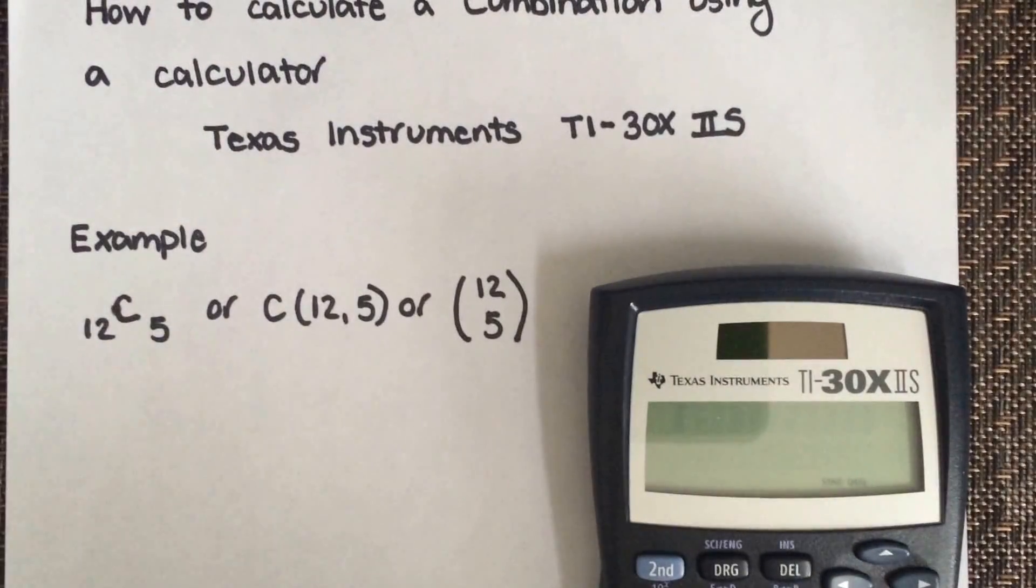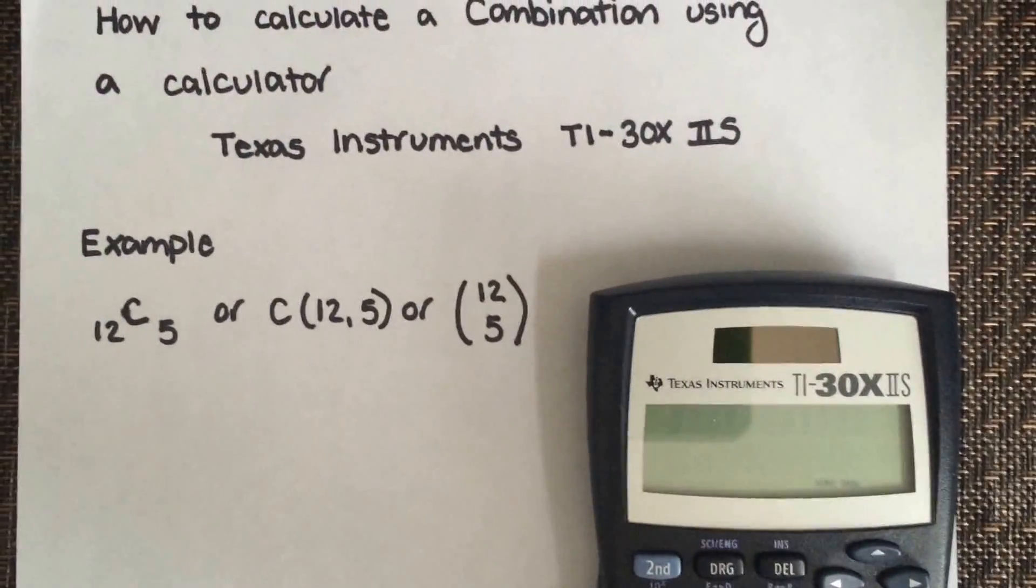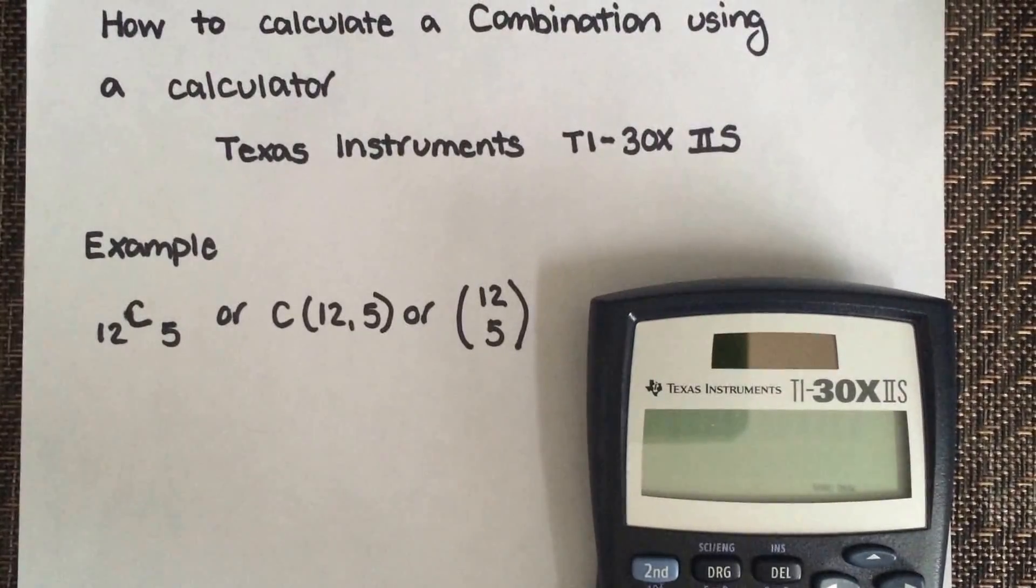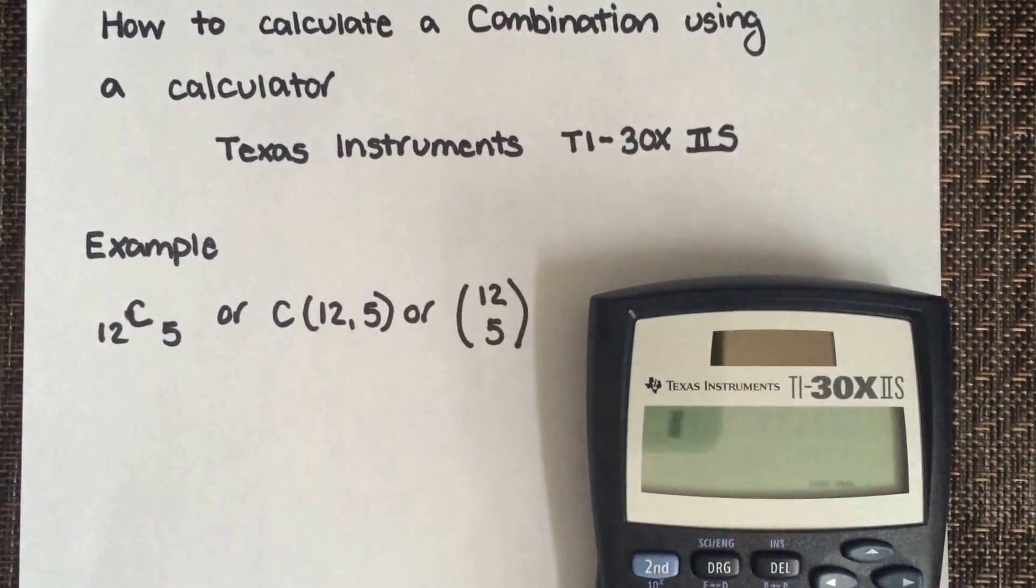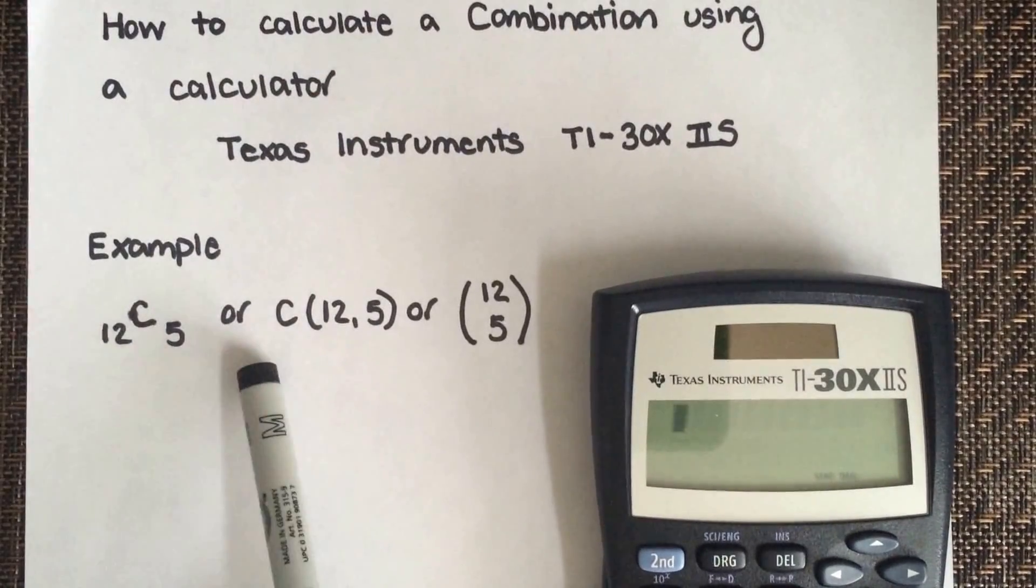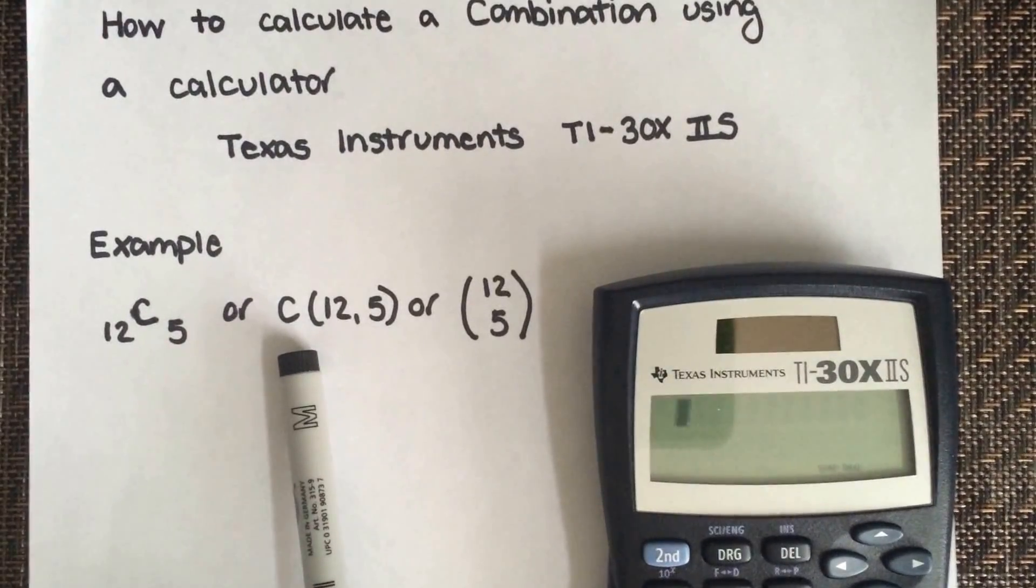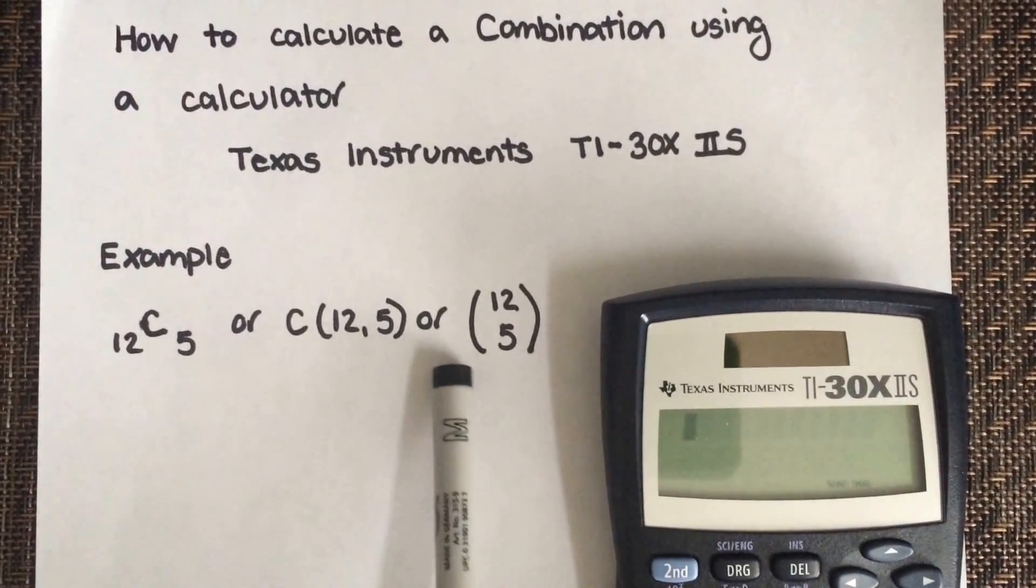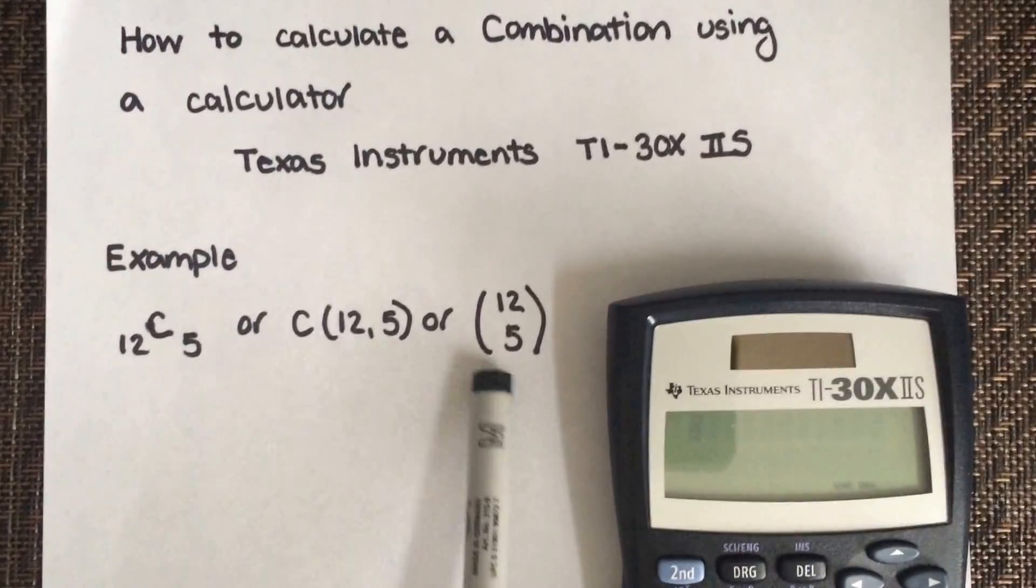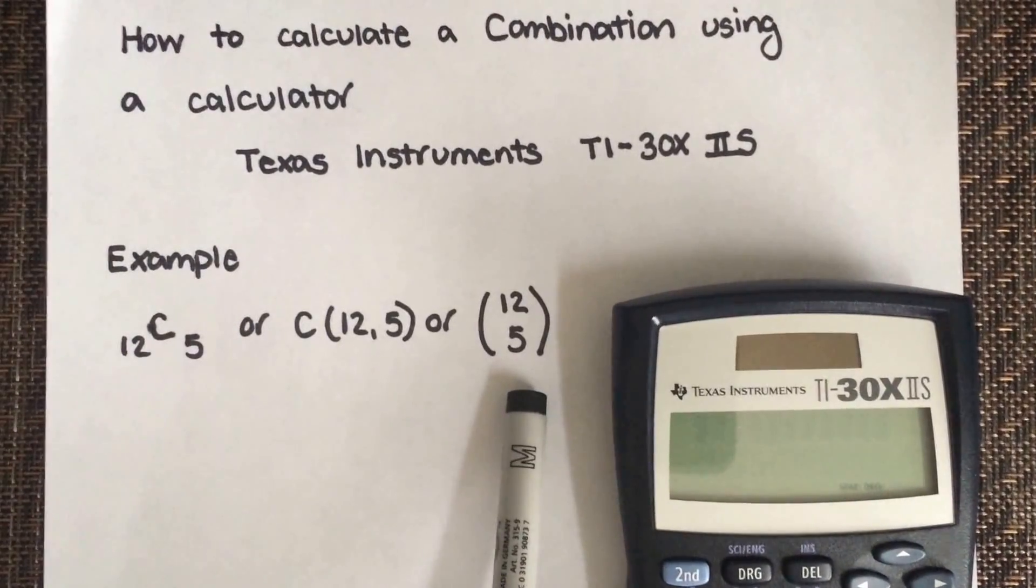How to calculate a combination using your Texas Instruments TI-30X IIS. The example I'm going to show you is 12 choose 5, or it's often written with the C for combination on the outside and then in brackets 12 comma 5, or you'll see it in brackets with the 12 on top and the 5 at the bottom.